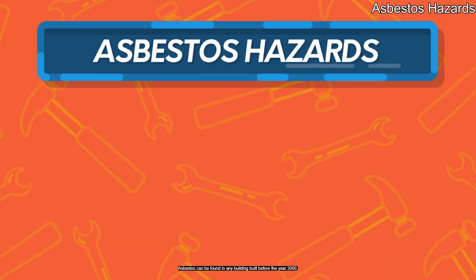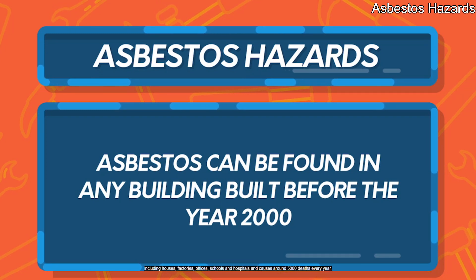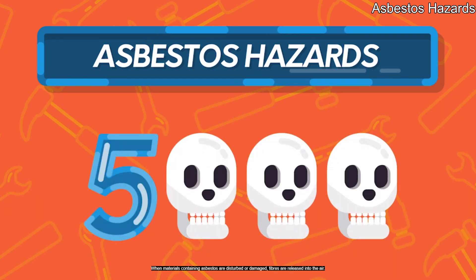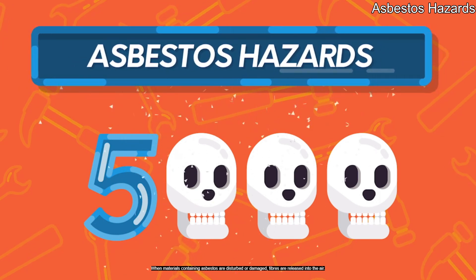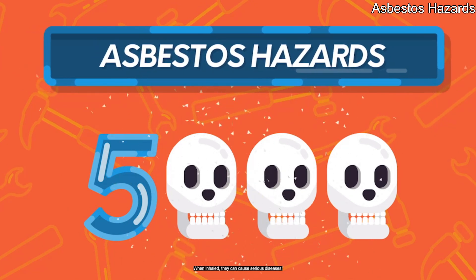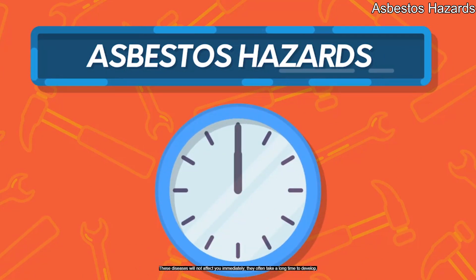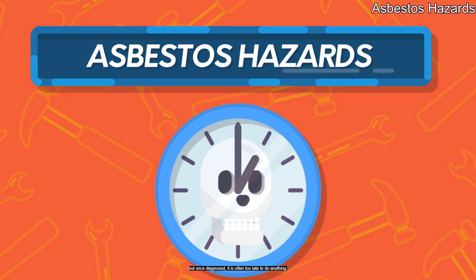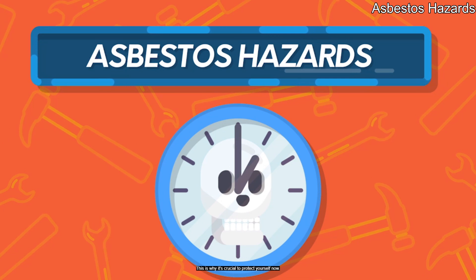Asbestos can be found in any building built before the year 2000, including houses, factories, offices, schools and hospitals, and causes around 5,000 deaths every year. When materials containing asbestos are disturbed or damaged, fibres are released into the air. When inhaled, they can cause serious diseases. These diseases will not affect you immediately — they often take a long time to develop. But once diagnosed, it is often too late to do anything. This is why it's crucial to protect yourself now.